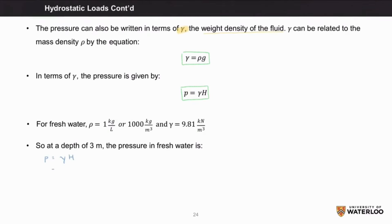So at a depth of 3 meters, if we apply the equations from above, we get the pressure of water to be 29.43 kilonewtons per meter squared, or 29.43 kilopascals.